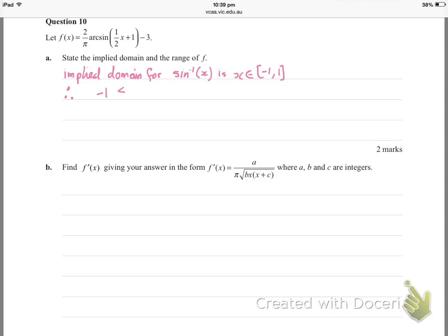The implied domain for just the basic inverse sine of x goes from negative 1 to 1. That's the starting point. The argument of the arc sine function, which is ½x + 1, has an implied domain of negative 1 to 1. So we set that up. Now let's solve this for x. I'm going to subtract 1 from both sides to eliminate this part.